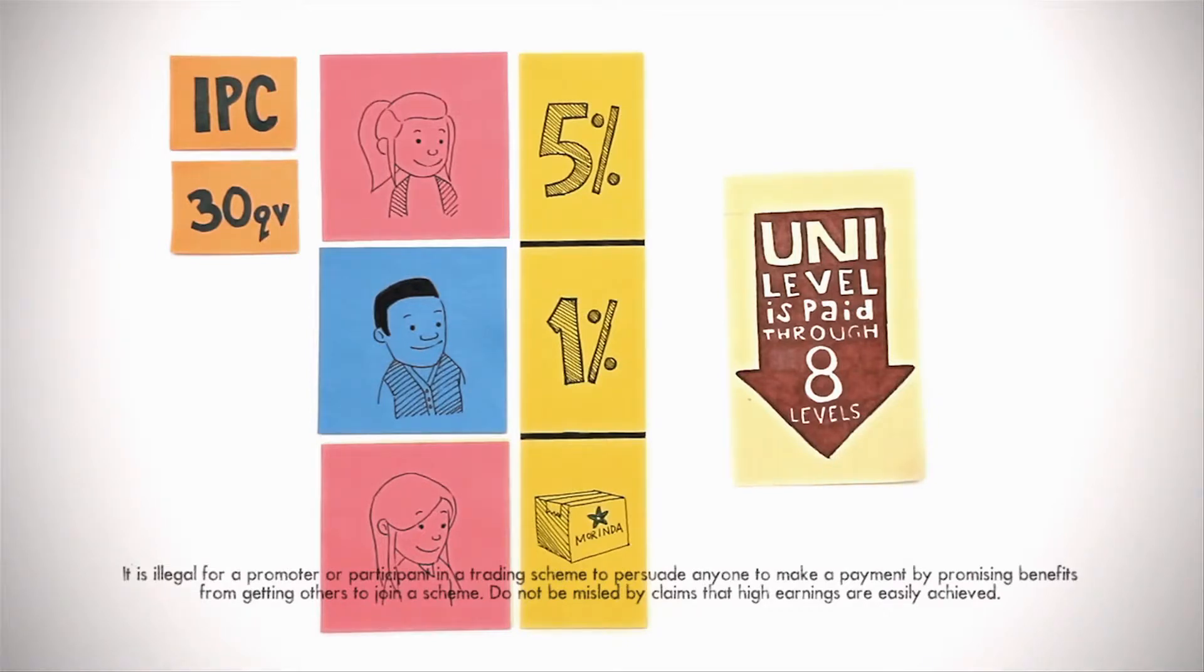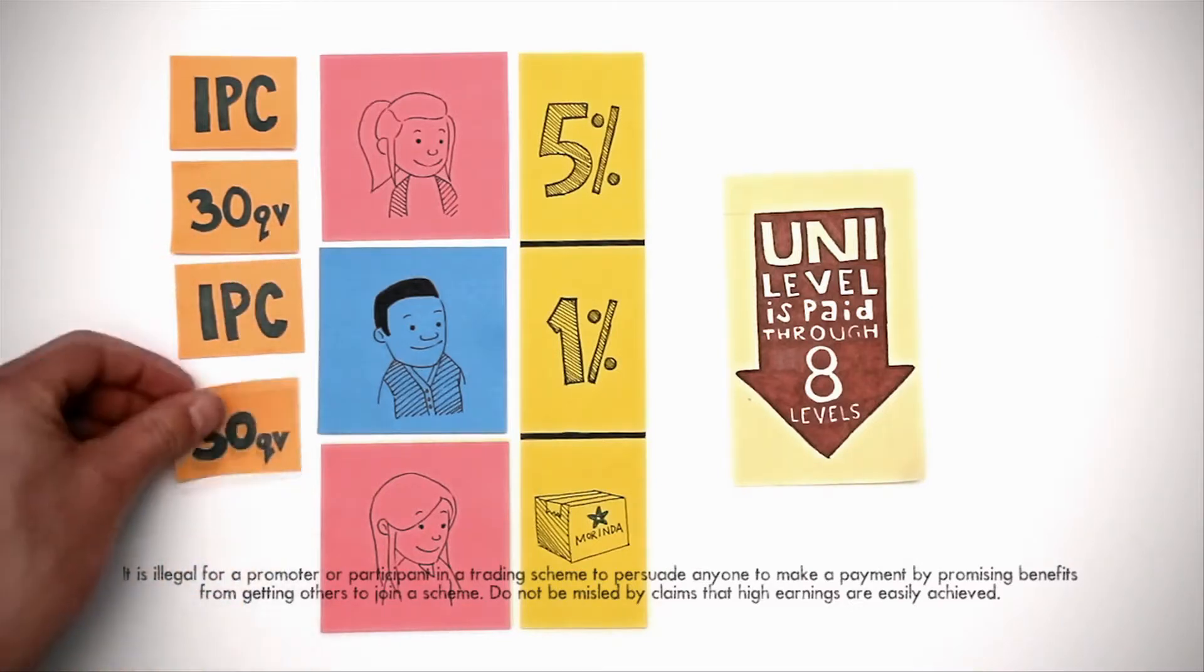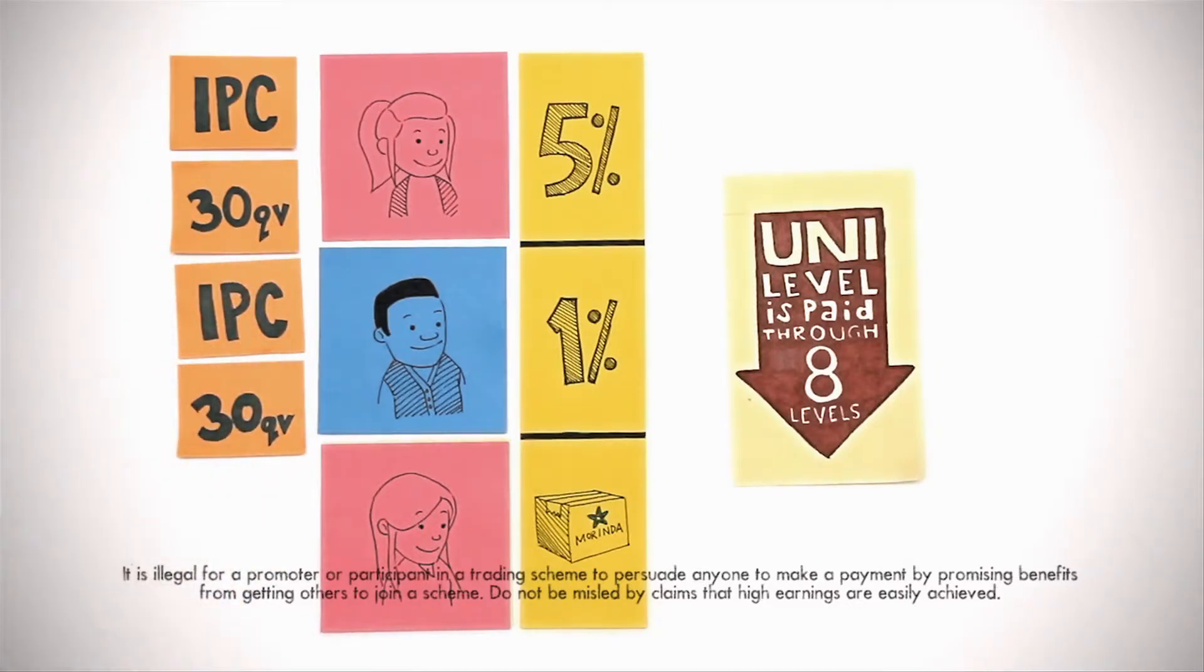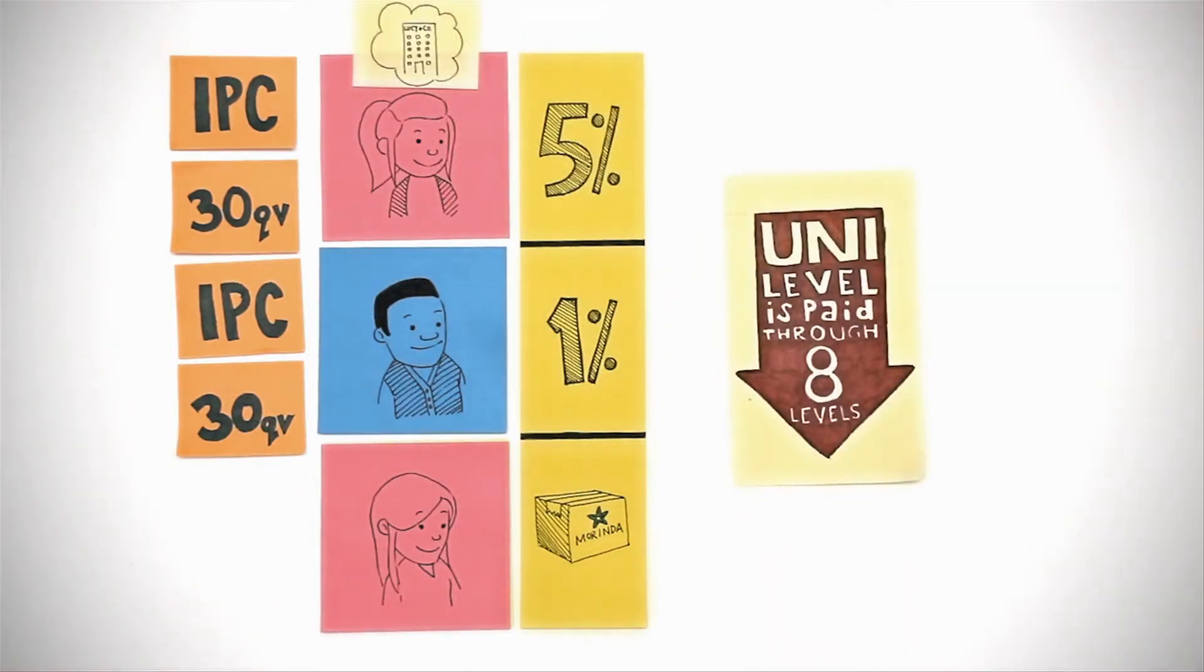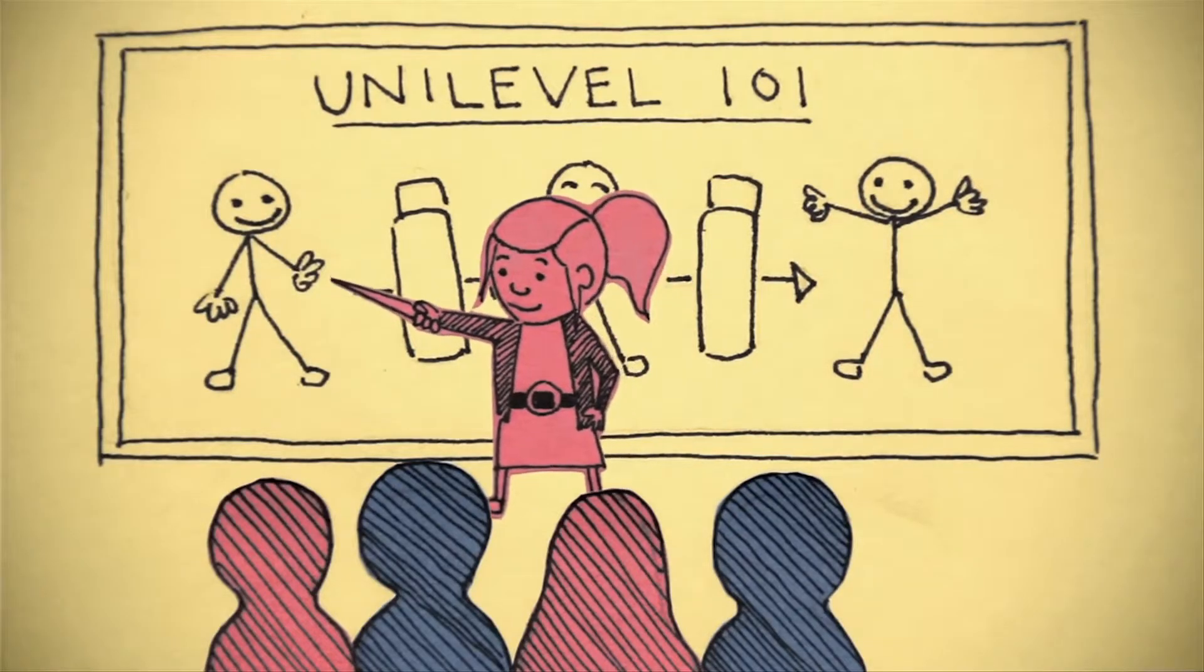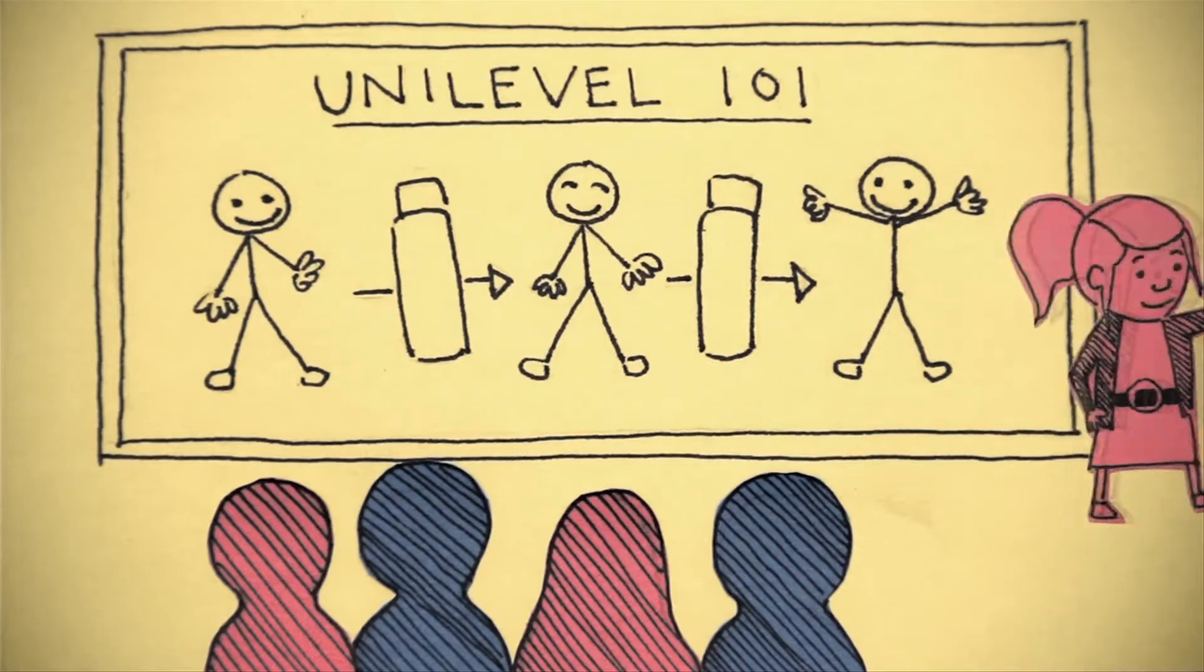And Lucy and Dan will continue to earn these payouts as long as they're active IPCs who purchase at least 30 QV in a month. When Lucy started to see the money roll in, it really made her think about how to build her business. She learned the same lesson that every successful IPC learns: the key to success is teaching your IPCs how to build their downline.